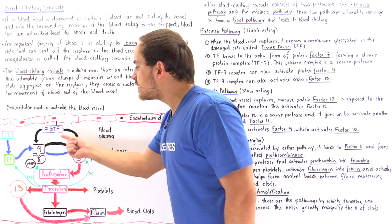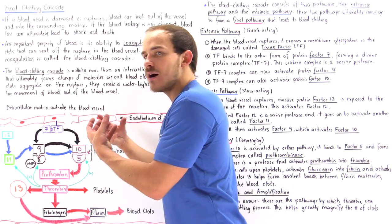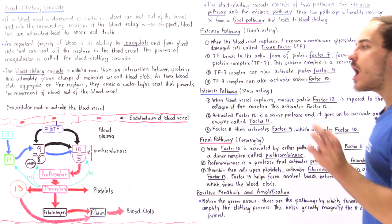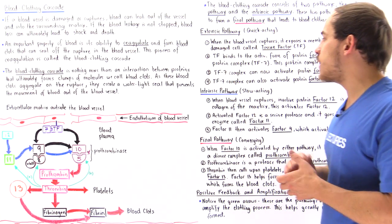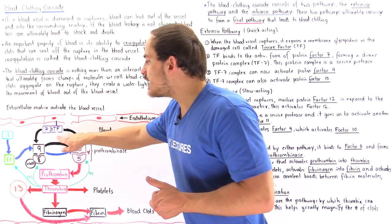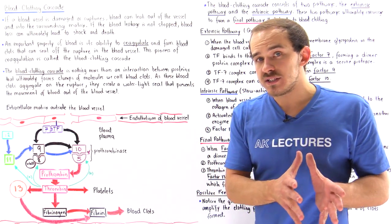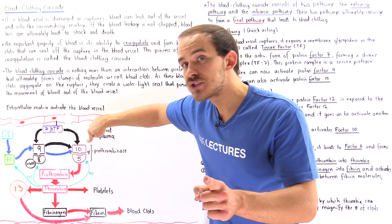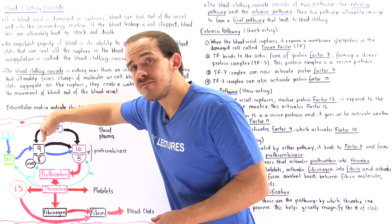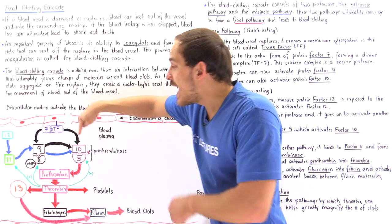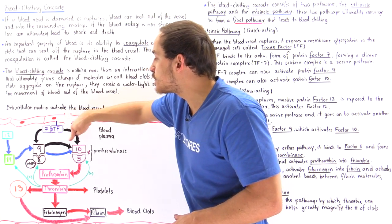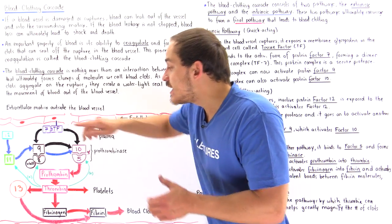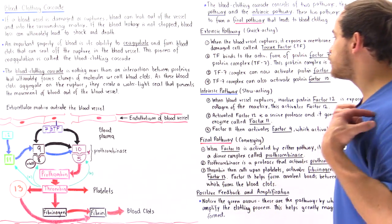Once tissue factor is exposed on the membrane, the active form of factor seven, found in close proximity, binds onto the tissue factor to form a dimer protein complex called TF-7. This complex is a serine protease that activates other enzymes by cleaving them at specific amino acids. The TF-7 complex activates two proteins: factor nine and factor ten. Factor nine then goes on to activate more factor ten — an amplification process that increases the amount of factor ten formed.